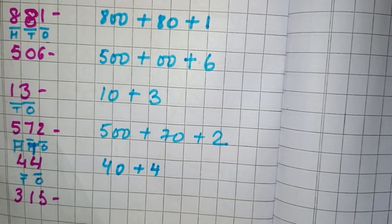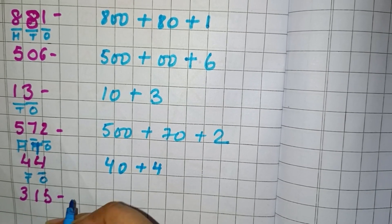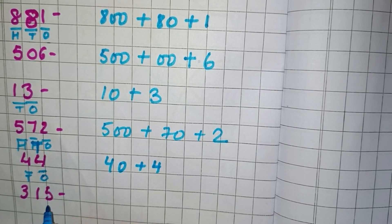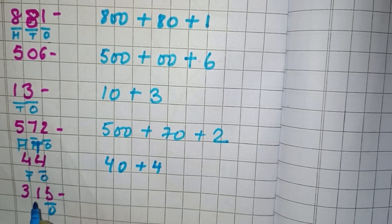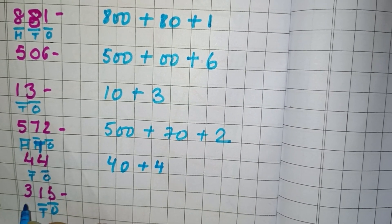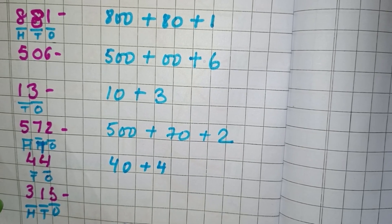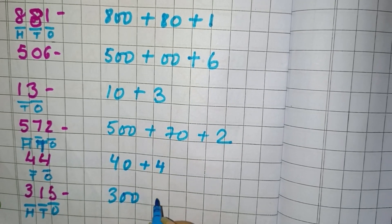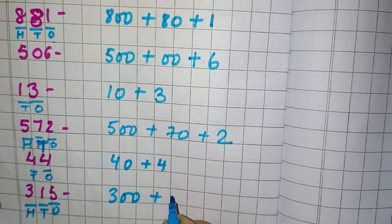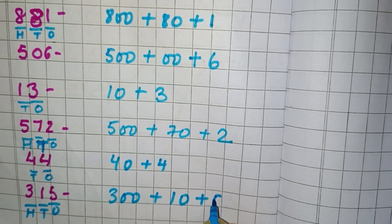Now next we have 315. So here 5 is in 1's place, 1 is in 10's place, and 3 is in 100's place. So we will write 300 plus 10 plus 5.